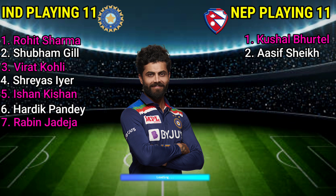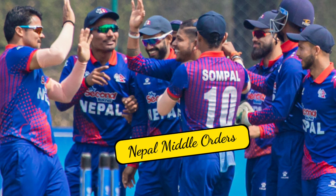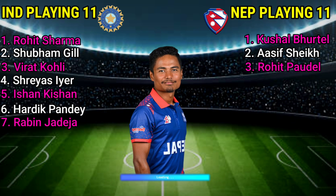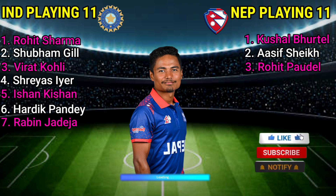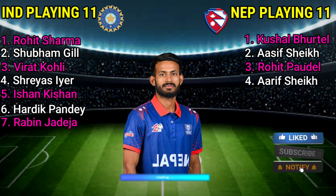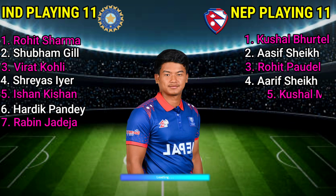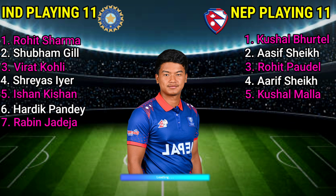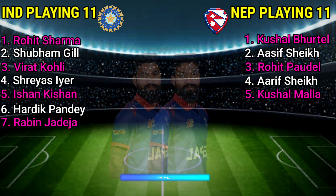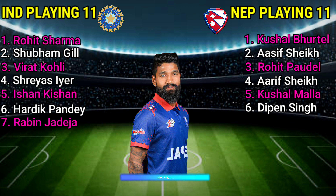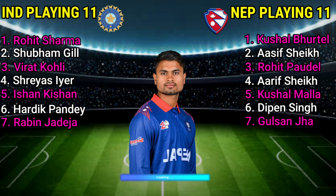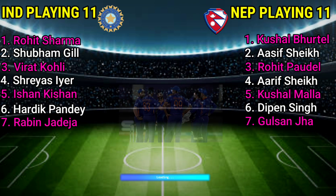Nepal team middle order. No. 3: Rohit Paudel, captain and batsman. No. 4: Arif Sheikh, bowling all-rounder. No. 5: Kushal Malla, all-rounder. No. 6: Dipendra Singh, batting all-rounder. No. 7: Gulshan Jha, fast bowler.